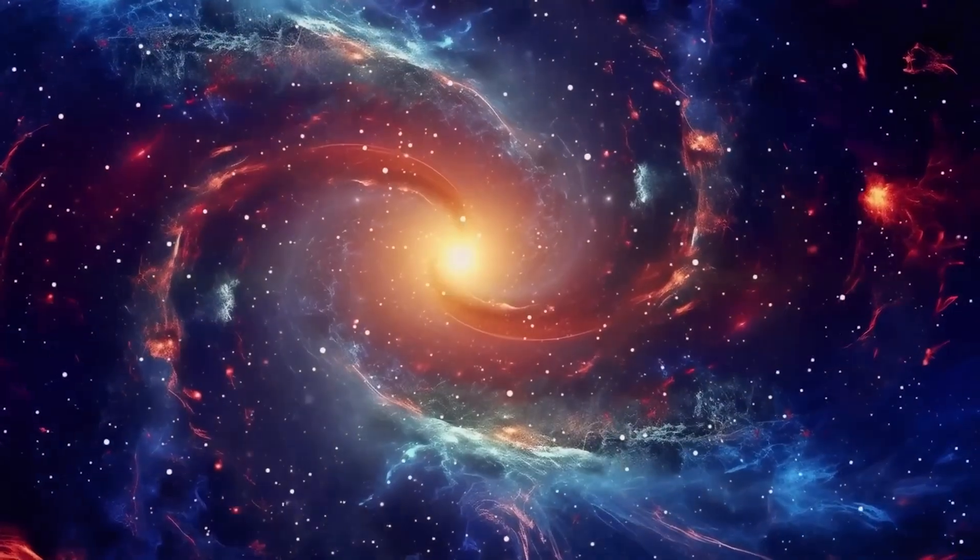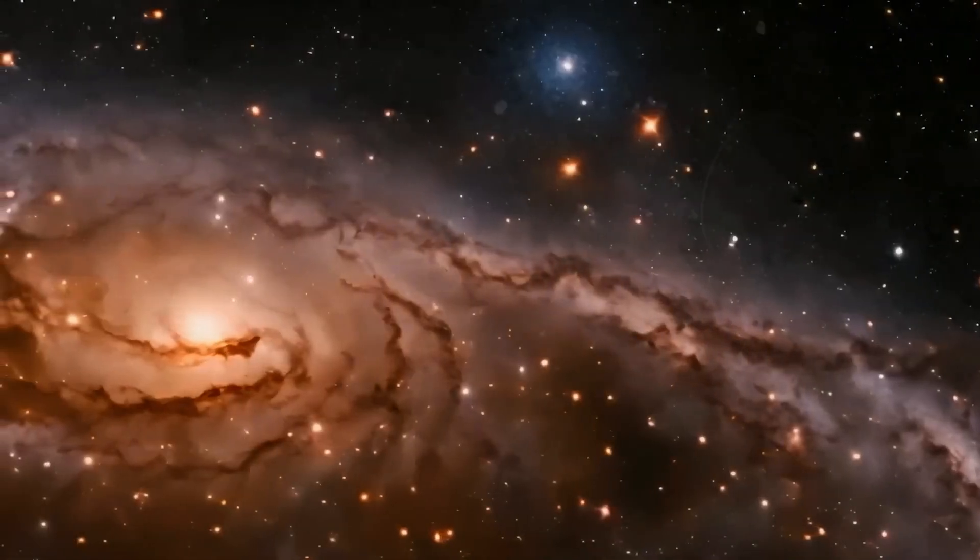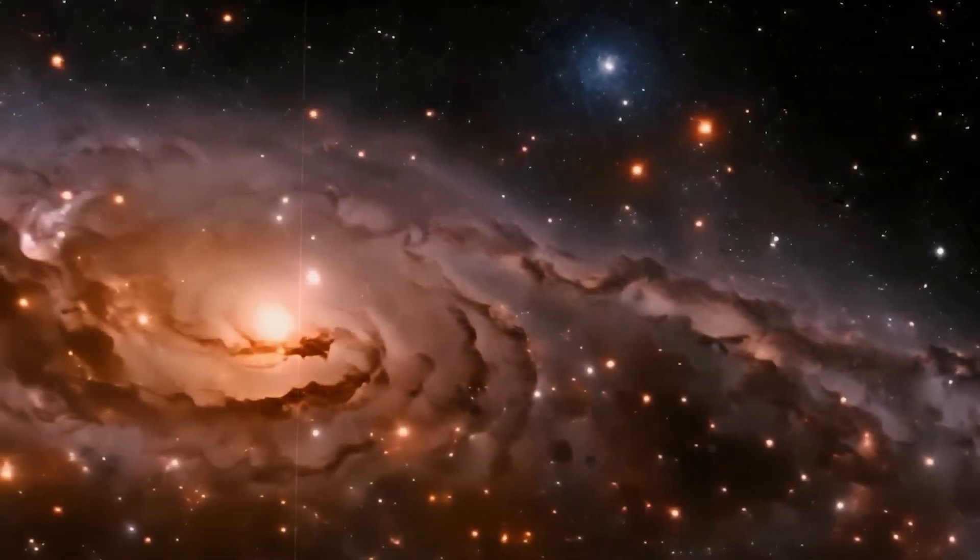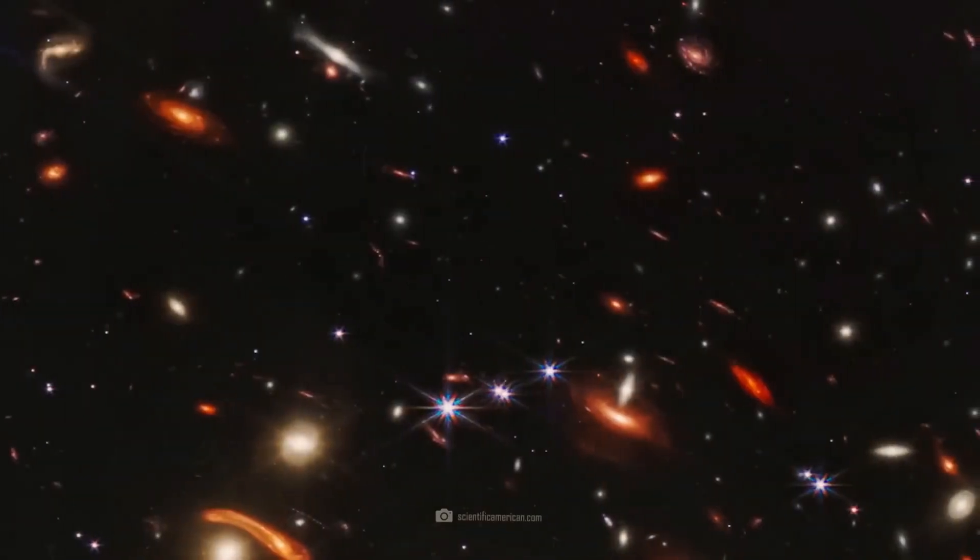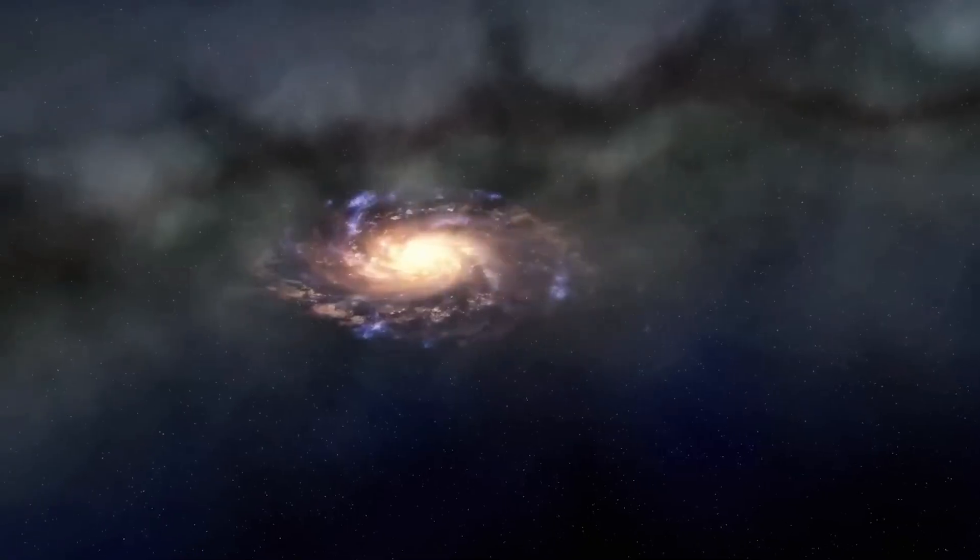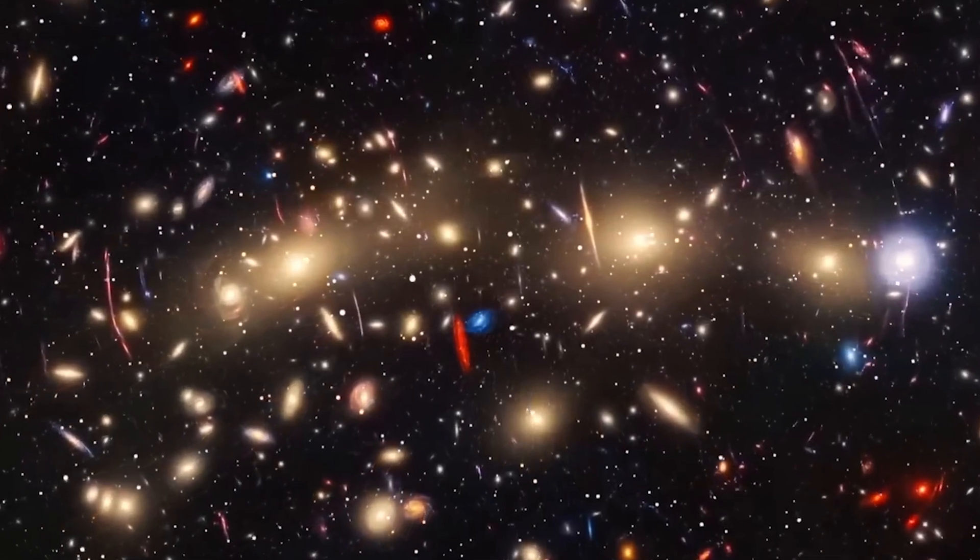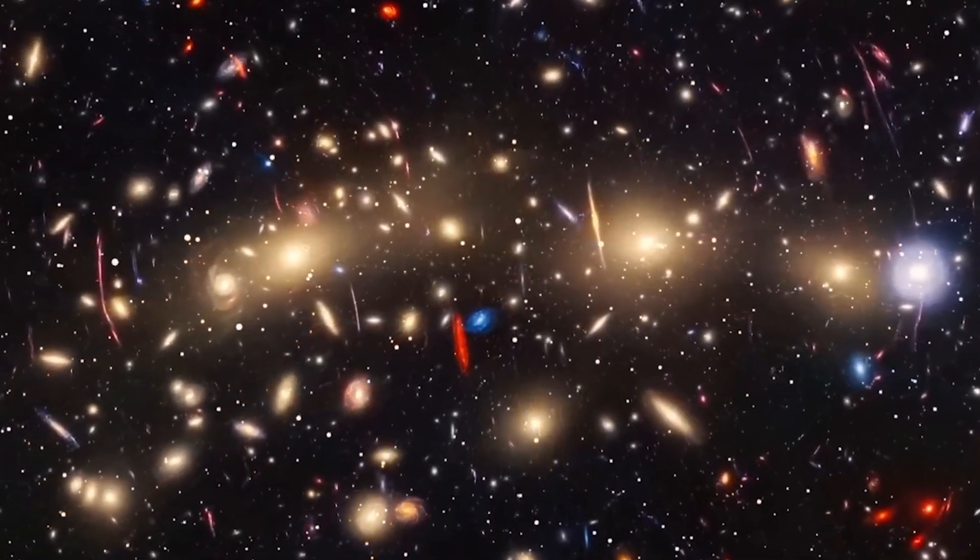Meanwhile, Webb keeps delivering. One of its recent deep field images revealed what looks like a sprawling web of galaxies just 650 million years after the Big Bang, arranged in a massive filament stretching across hundreds of millions of light years. Structures that size shouldn't have existed so soon. And yet, there they are: ancient, magnificent, and utterly defiant of our expectations.